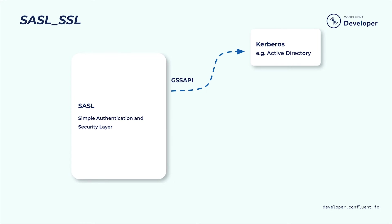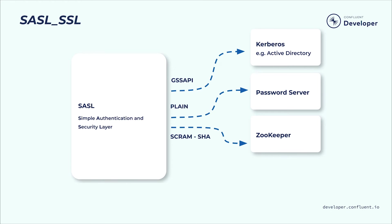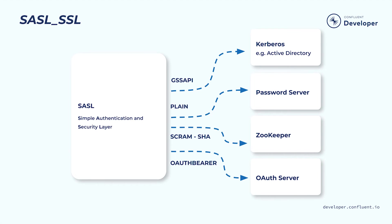The main reason you might choose SASL SSL over the SSL security protocol is because you want to integrate Kafka with an existing Kerberos server, such as Active Directory or OpenLDAP, in your organization. Kafka supports four different SASL authentication mechanisms, of which the most commonly employed is GSSAPI, which provides for authentication using Kerberos. The other mechanisms include two username and password mechanisms, PLAIN and SCRAM-SHA-256 and 512, and OAuthBearer, which is the machine-to-machine equivalent of single sign-on.